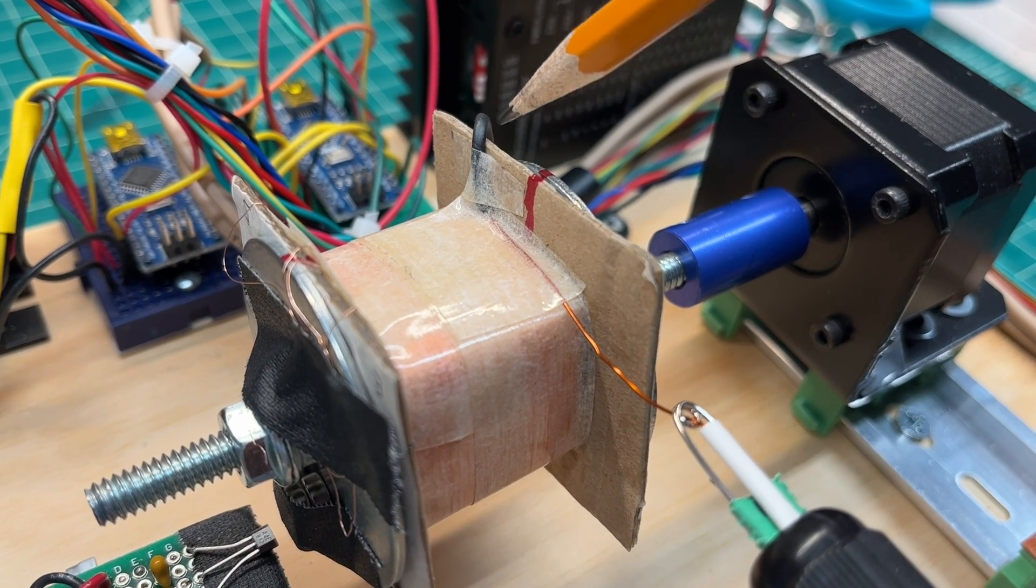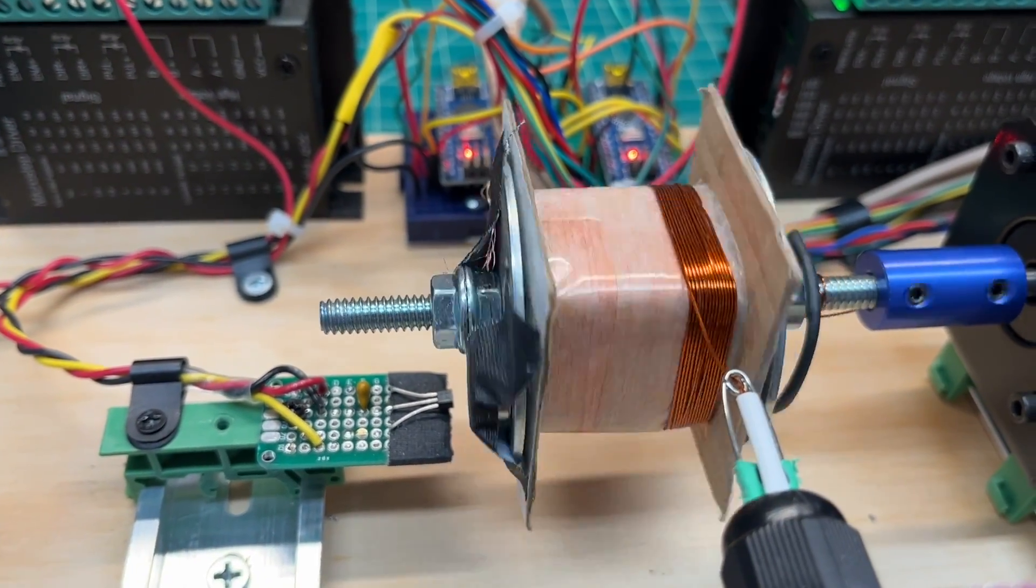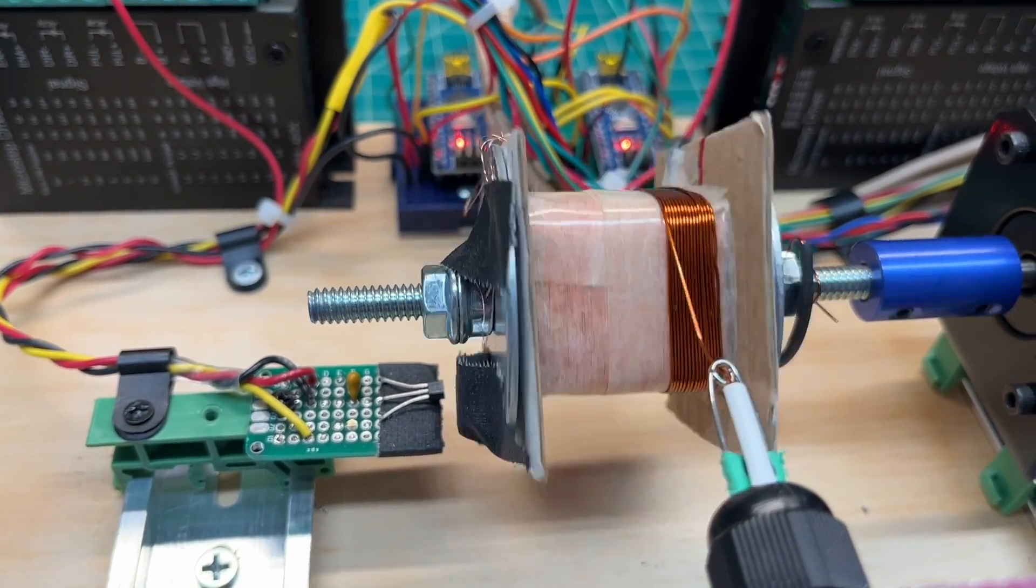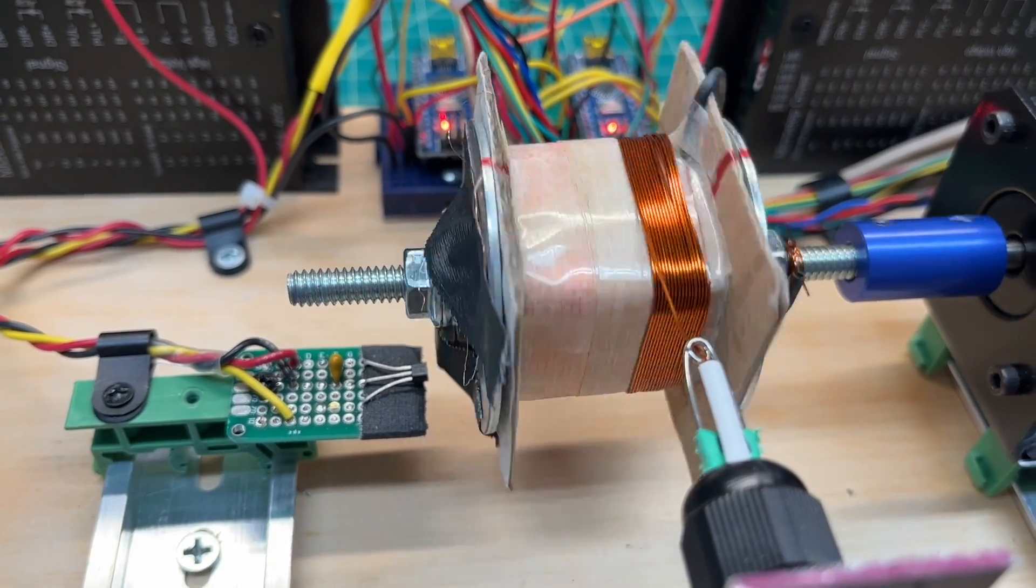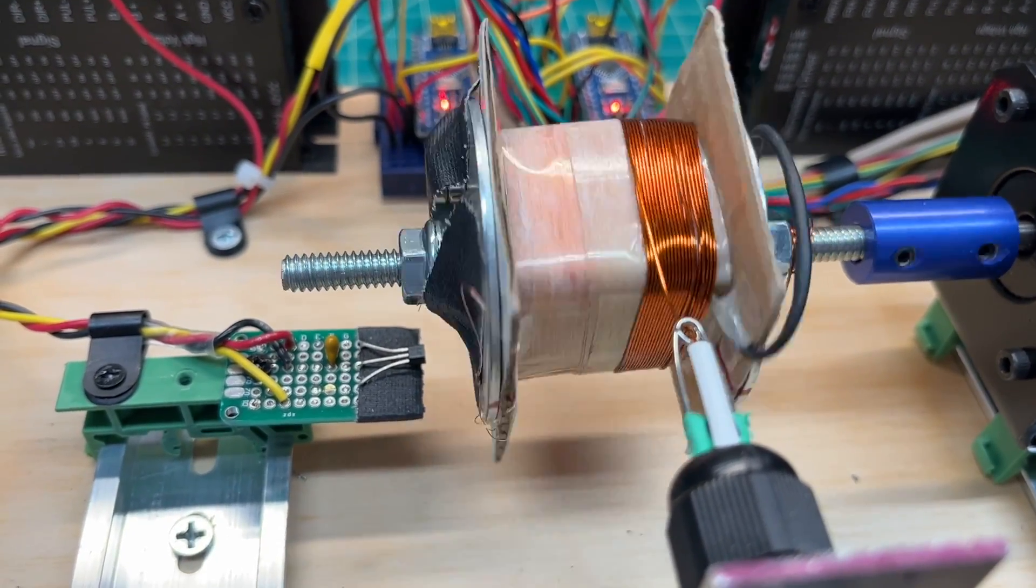Okay guys, picking up where I left off, I'm winding the primary, roughly 59 turns per layer, about 12 layers in total, for 709 turns.